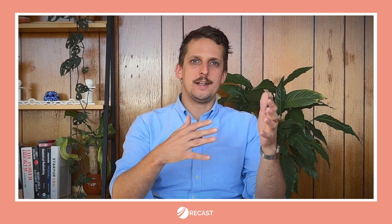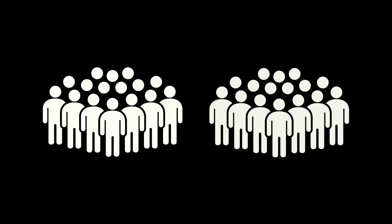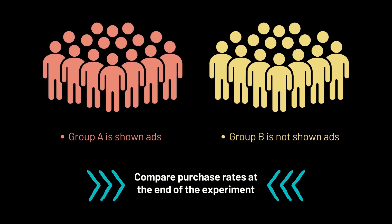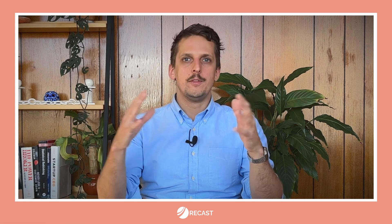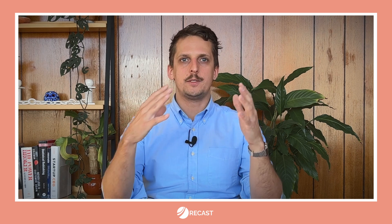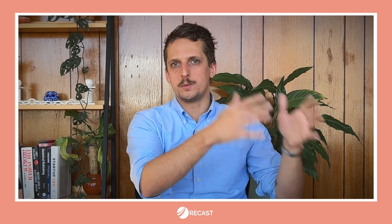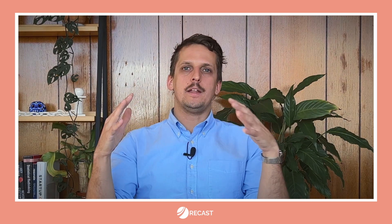A randomized control trial works in marketing the same way it does in medicine. The idea is to take a sample of potential users or customers and then randomly split the group in two. You show ads to one group but not the other — the control group — and then you compare the purchase rates between those two groups. If the groups were truly randomly split and are otherwise comparable, then any difference in purchase rates can be attributed to the ads that the treatment group saw. That's the idea behind lift tests.